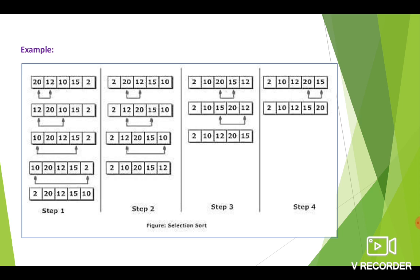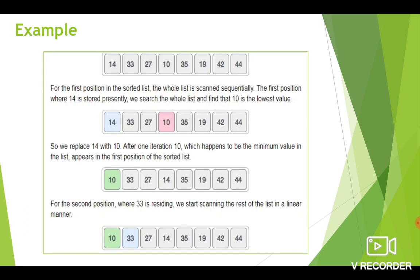After swapping, the element at the second position is compared with the last element of the array, which is 10. Since they are not in order, we are performing swap. So it is the end of the second iteration. Now the array becomes 2, 10, 20, 15, 12. You have to repeat the steps until the entire list is sorted.